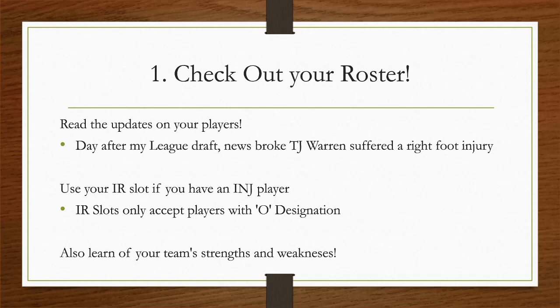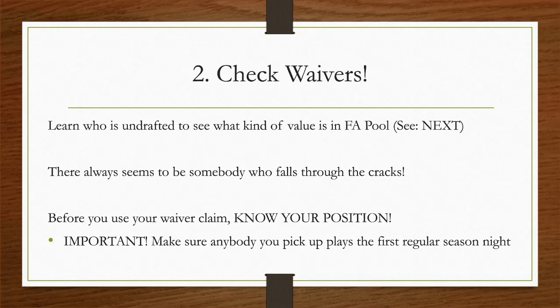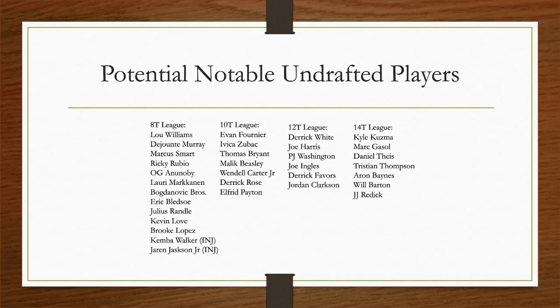You should be competitive in the rest of the categories. Second, you should check your waivers. Learn who went undrafted to see what kind of value is in the free agent pool. These are players I deem notable in different types of leagues — 8, 10 team, 12 team, and even 14 team leagues. I didn't go beyond that because after that I don't feel like I could give valuable information, but up to 14 team leagues I feel like I could give some value.